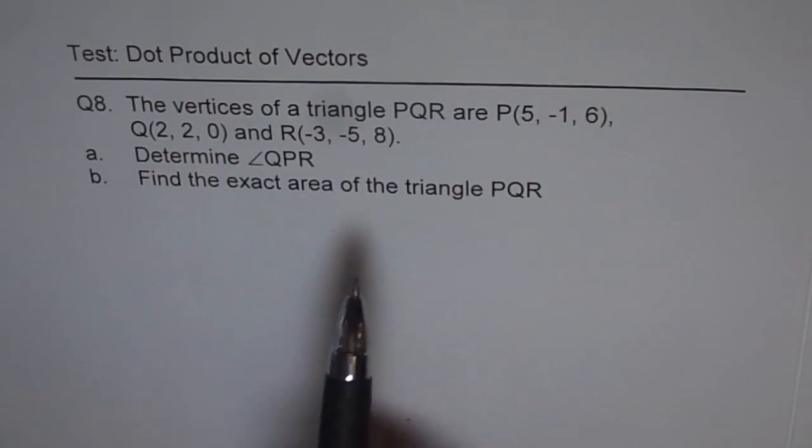Part A is determine angle QPR and part B is find the exact area of the triangle PQR. So pause the video and then once you have solved, restart and watch my suggestions.